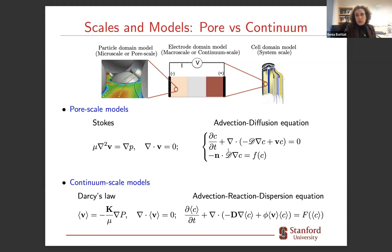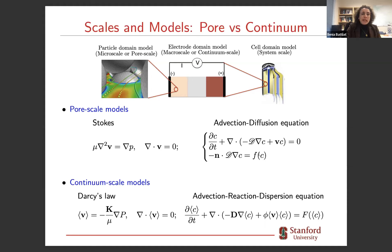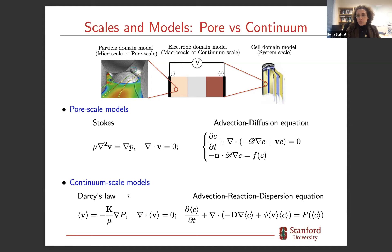For pore-scale models — thinking of single-phase flow and solute transport — we use Stokes equations at low Reynolds numbers and an advection-diffusion equation for mass transport, with appropriate boundary conditions such as heterogeneous reactions at the solid-liquid interface. At the pore scale, we model velocity, pressure, and concentration as local values within the pore space. We can also use continuum-scale models that represent the same physics at a completely different scale.